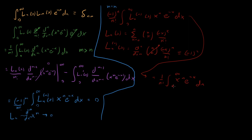That integral is a famous one — it's just the gamma function of n plus 1. And the gamma function of n plus 1 is equal to n factorial. So we have n factorial over n factorial, which equals 1. We're done.